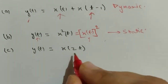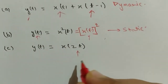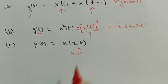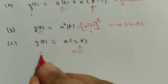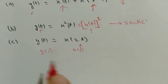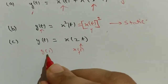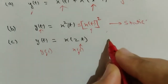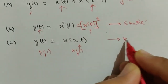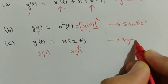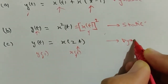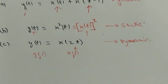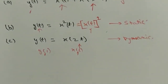Next question: y(t) = x(2t). Put t = 1: you get x(2) and y(1). This is future dependency — the output at 1 second depends on input at 2 seconds. Therefore this is a dynamic system.